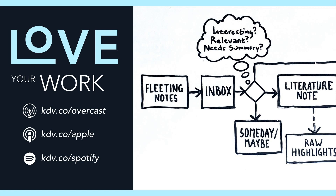Finally, I break my condensed highlights into permanent notes — one idea per note — in my slip box. This is when I add relevant tags, link the note to existing related notes, and add thoughts about how the individual note relates to my work. I do this on my desktop using Obsidian. I don't do this for every book — only the ones I really want to absorb. For books that don't warrant these steps, Readwise sends me three random highlights each day from my database of 20,000 plus, which I review when I check my email.